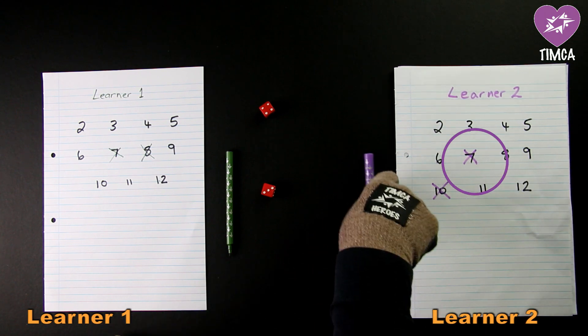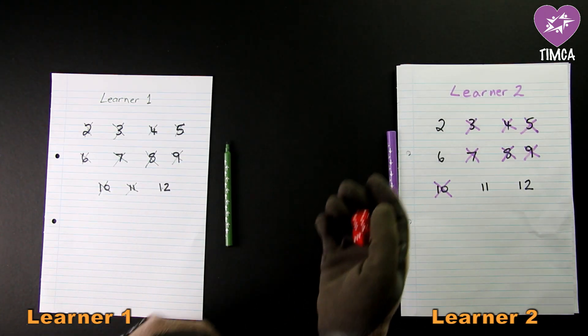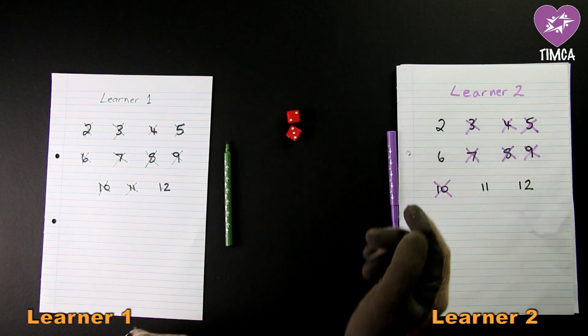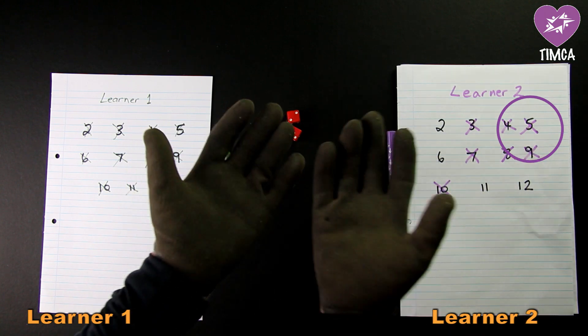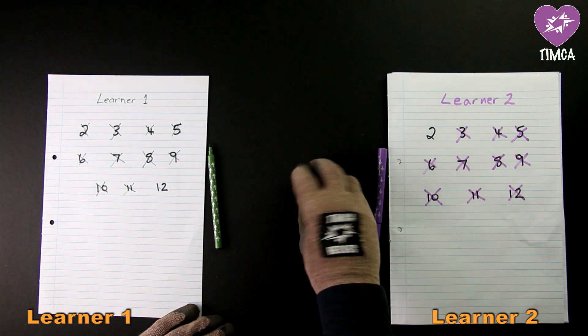Now we have had a few numbers crossed out and learner two is throwing and gets a three and a two which is equal to five. Five is already crossed out so it cannot be crossed out again.